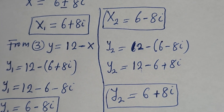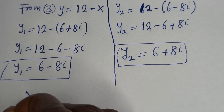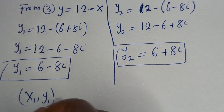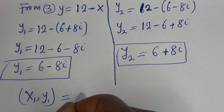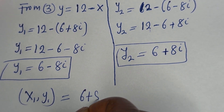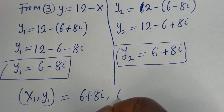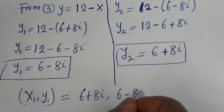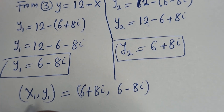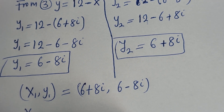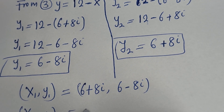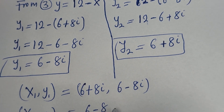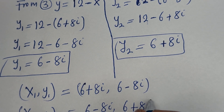Therefore, our final answers are: (S1, Y1) equals (6 plus 8i, 6 minus 8i), and (S2, Y2) equals (6 minus 8i, 6 plus 8i).